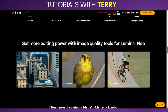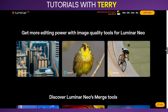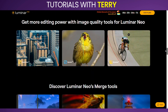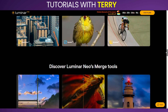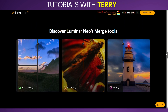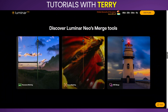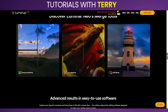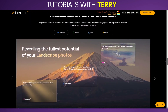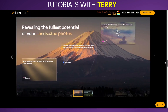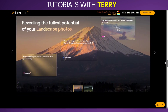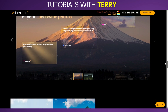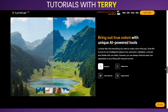Relight AI adjusts the lighting in different parts of the photo to create natural-looking effects. Bokeh AI simulates realistic bokeh effects, adding a professional touch to portraits. The user-friendly interface features an intuitive layout that makes it easy for users of all levels to navigate and use the software.